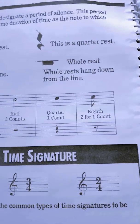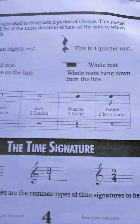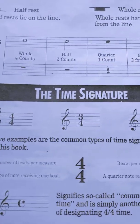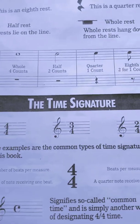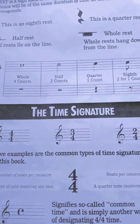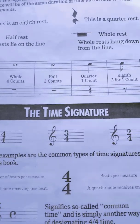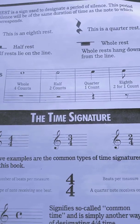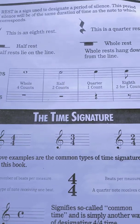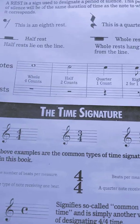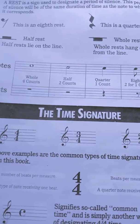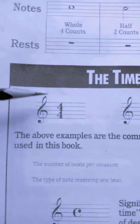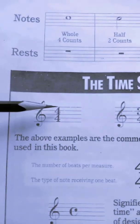Now we will learn what a time signature means. The time signature is very important when you start learning how to read and write music. It's very important to first look at what the time signature is, as it implies how long a bar will last — how many beats are there in a bar. The first time signature we are going to learn is four four.